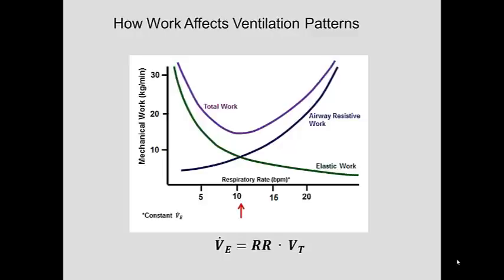Minute ventilation is the product of the respiratory rate and the tidal volume. As a rough index, the minute ventilation corresponds to our respiratory demands — how much air we need to ventilate in order to maintain appropriate partial pressures of carbon dioxide and oxygen.